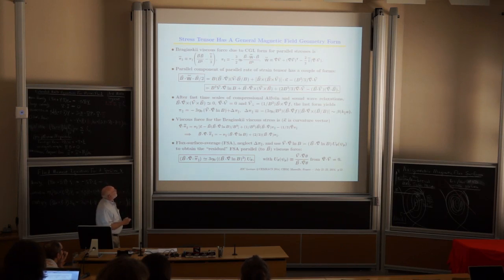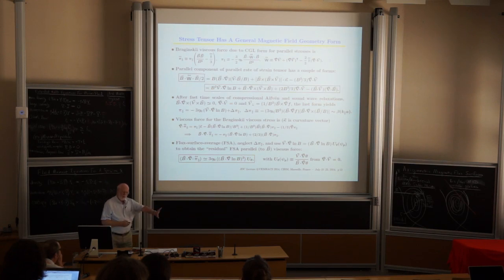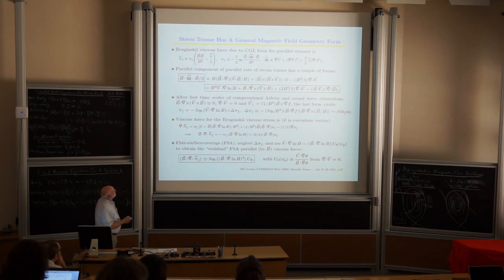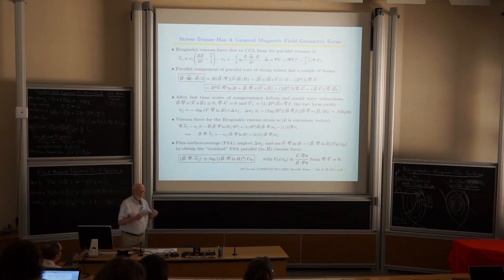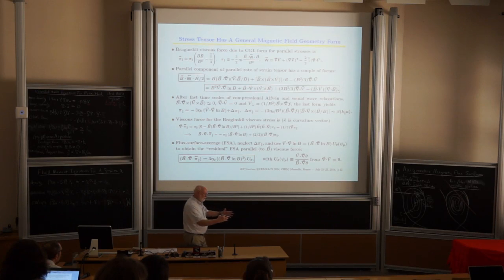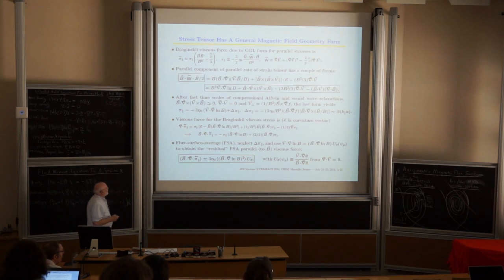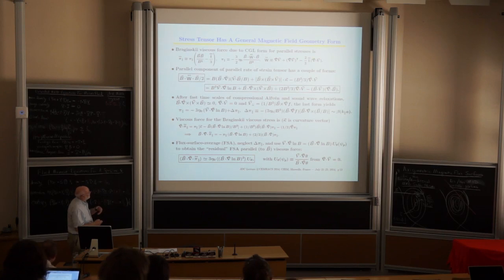After the fast-timescale compressional Alfvén wave and sound wave relaxations, all those terms go away, and you end up with a parallel stress driven by flows along the magnitude of the magnetic field. As the field converges along the bumps, you can write the divergence of the parallel stress as curvature, grad log B terms. B·∇·π looks like a specific expression involving these geometric quantities.